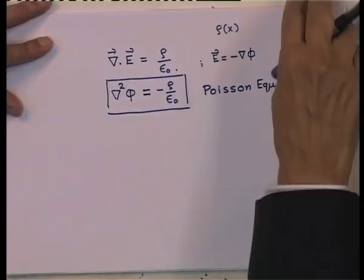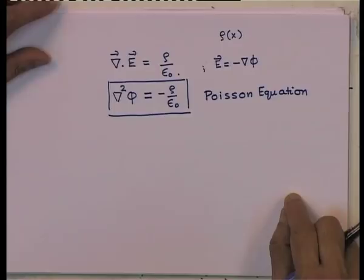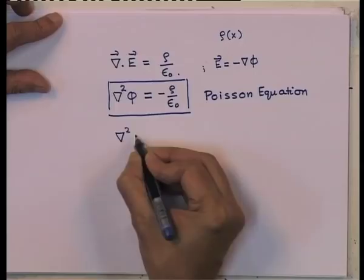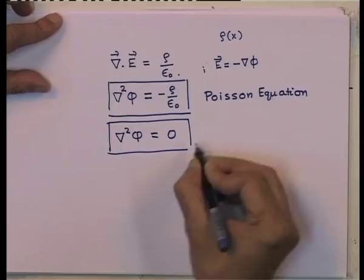Supposing I have a region of space in which there are no sources of charge, in which case rho becomes equal to 0, and the equation then becomes del squared phi equals 0, which is known as the Laplace's equation.